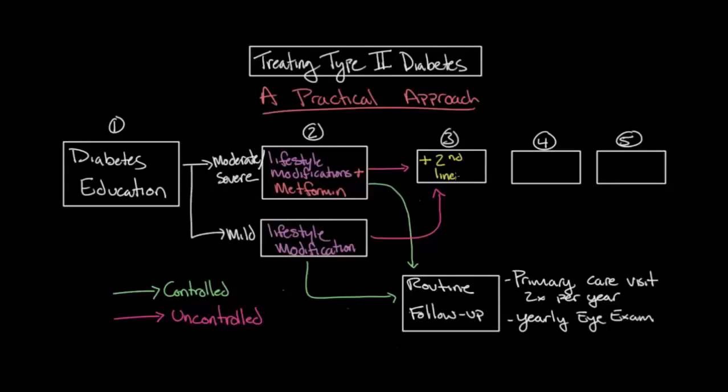Then, once again, the individual should have a recheck appointment in one to two months, and the process then repeats itself from here on. So the fourth step would be to add a second, second-line medication.